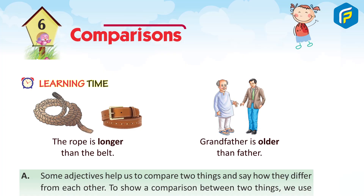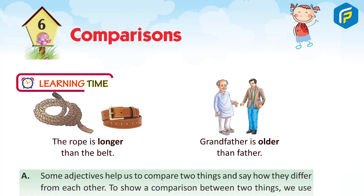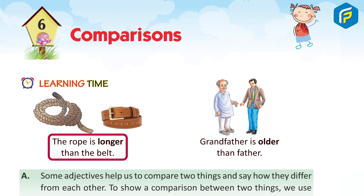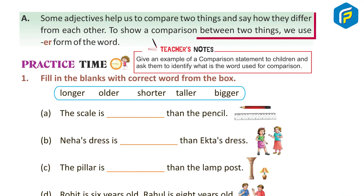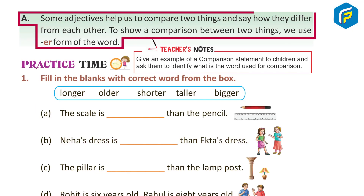Chapter 6: Comparisons. Learning Time. The rope is longer than the belt. Grandfather is older than father. Some adjectives help us to compare two things and say how they differ from each other.